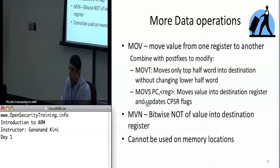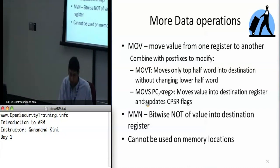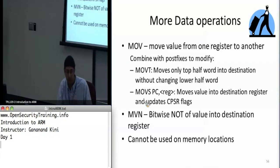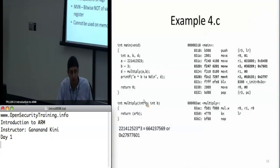Finally, we have MVN — move negative — which takes the ones complement of the value in the register and puts it into the destination register. These instructions cannot be used on memory and are only applicable to registers, getting back to that load-store feature of ARM.